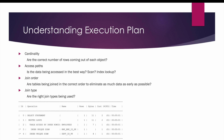Cardinality tells you the correct number of rows coming out of each operation. For example, if we see estimated rows as 1 for operation number 3, it means that operation is expecting 1 row — so the cardinality is 1. Since it is a unique scan, it will always estimate 1 row. In simple words, cardinality means how many rows we are expecting out of each operation. Similarly, operation number 4 also expects 1 row, so its cardinality is 1.